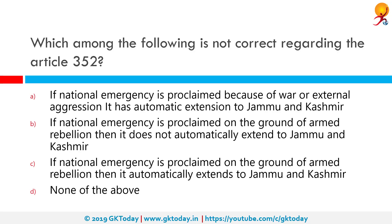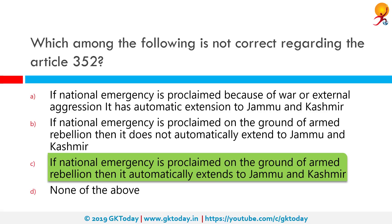Which among the following is not correct regarding Article 352? The correct answer is: if national emergency is proclaimed on the ground of armed rebellion, then it automatically extends to Jammu and Kashmir — this is not correct. Article 352 states that national emergency can be declared on the basis of external aggression or armed rebellion in the whole of India or a part of its territory. Such an emergency was declared in India in 1962 during the Indo-China war, in 1971 during the India-Pakistan war, and in 1975 when it was declared by then Prime Minister Indira Gandhi.